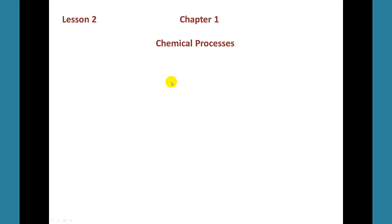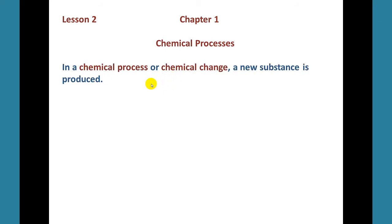In this lesson, we're going to talk about chemical processes, and we're going to learn how to balance a chemical equation. First, in a chemical process, or also known as a chemical change, a new substance is produced.